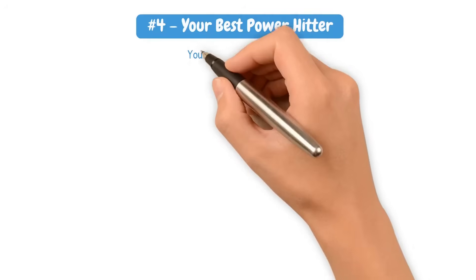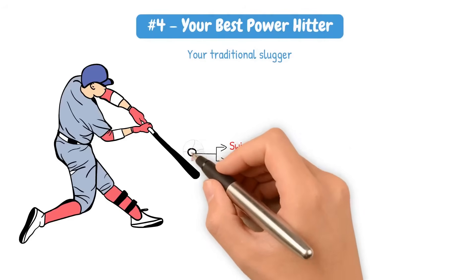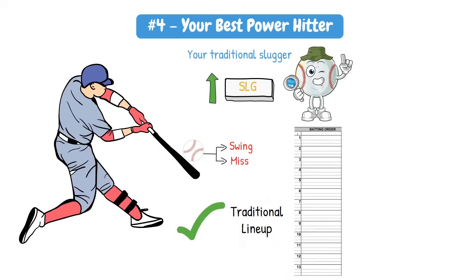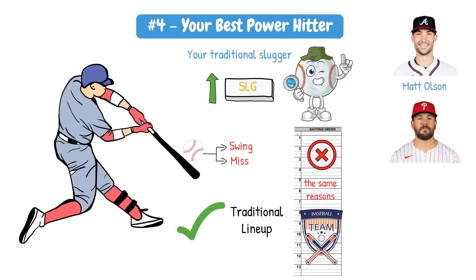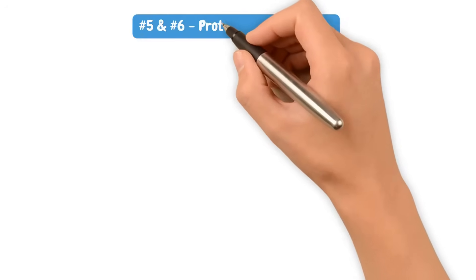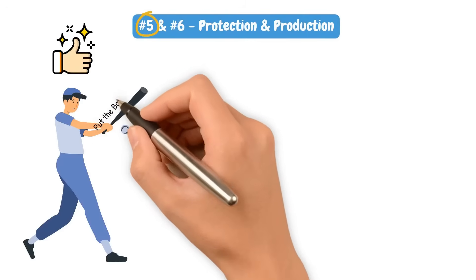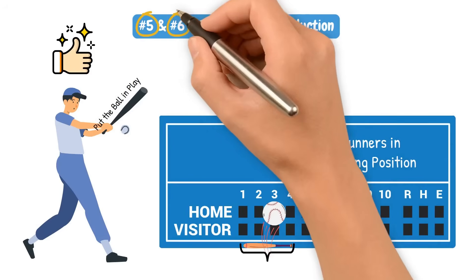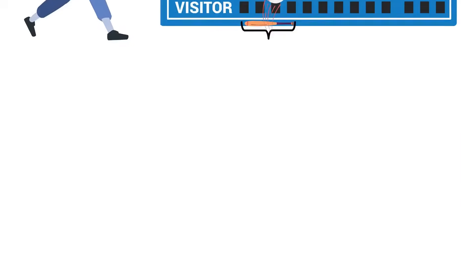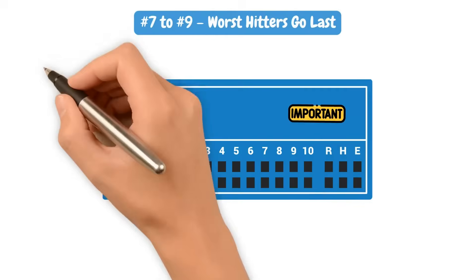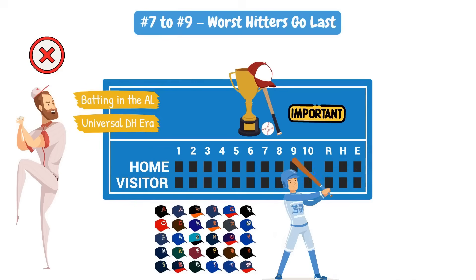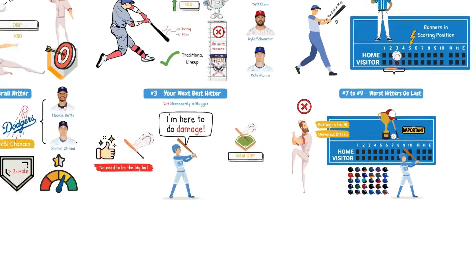Four is your best power hitter — your traditional slugger. This guy can have some swing and miss, but when he puts the ball in play, you're looking for very high slug. Think Matt Olson, Kyle Schwarber, or Pete Alonso. Your five and six holes are about protection and production — the five-hole batter ideally puts the ball in play frequently, hoping to come up with runners in scoring position if one through four are doing their jobs. Six is your next available best hitter. Then seven, eight, and nine are your worst hitters going last, though the nine spot matters too — with the universal DH, some teams place a second leadoff-type hitter ninth to loop the lineup back to the top.